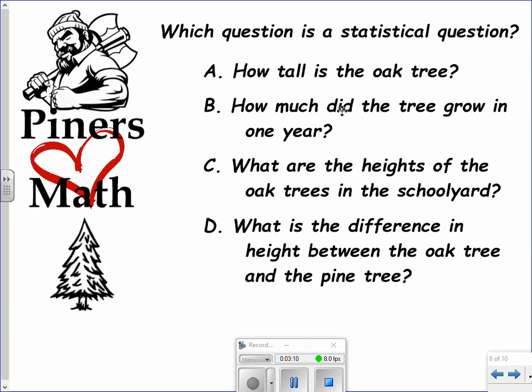So this question: how tall is the oak tree? Well, you can measure it, and that measurement should just be one number. How tall is that tree? So that does not represent a statistical question. There's only one answer to that question. How much did the tree grow in one year? Well, you could have measured it all year. There's only one measurement for how tall it actually grew in the course of one year. So that's also not a statistical question.